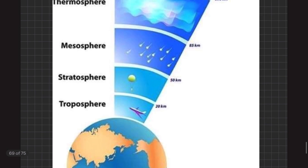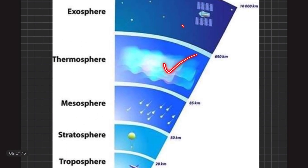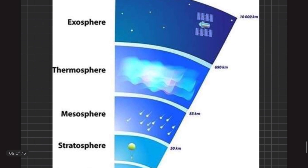The reason troposphere, stratosphere, and mesosphere form the homosphere is that strong winds and movement of air cause all atmospheric constituents to mix together, keeping their composition constant in these three layers. In contrast, thermosphere and exosphere have stagnant conditions, meaning molecules remain in place with no rapid movement. As a result, with increasing height, the composition of the atmosphere varies drastically, which is why these layers are called the heterosphere.